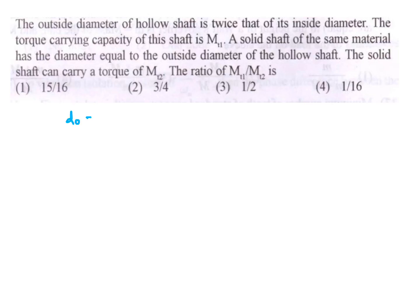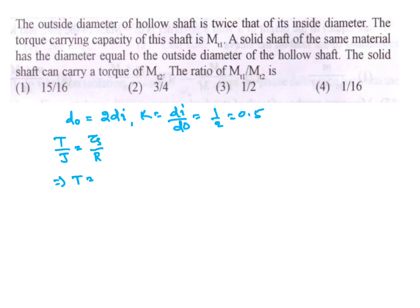Data given for hollow shaft: outside diameter DO = 2 times DI, so K = DI/DO = 1/2 = 0.5. We know T/J = tau_s/R, therefore T = tau_s × J/R. For the case of the hollow shaft: